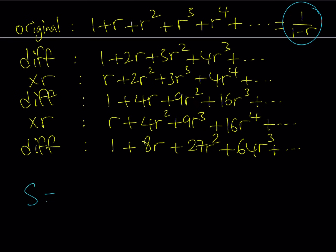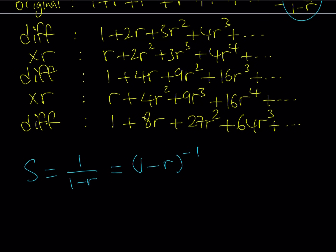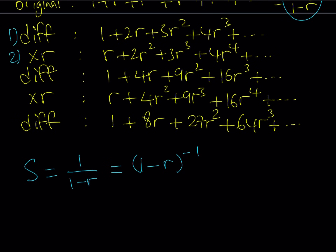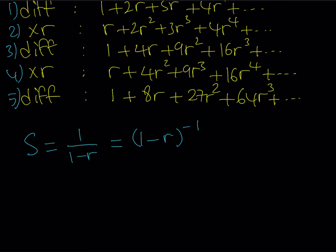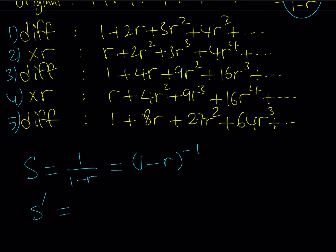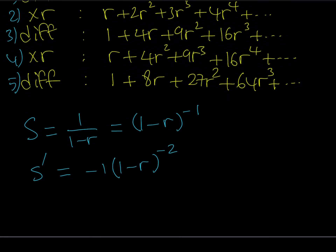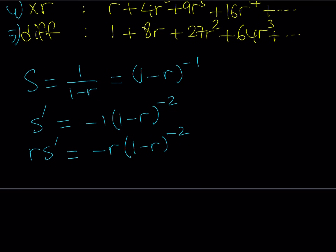I'll write the original expression as s equals 1 over 1 minus r, or equivalently 1 minus r to the power negative 1. Applying the five steps — differentiate, multiply by r, differentiate, multiply by r, differentiate. Step 1, differentiating s gives s prime equals negative 1 times 1 minus r to the power negative 2, which equals negative 1 over 1 minus r quantity squared. Step 2, multiplying by r gives r times s prime, which is the same expression with r in front.